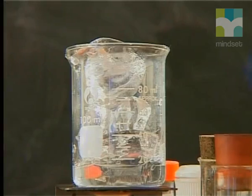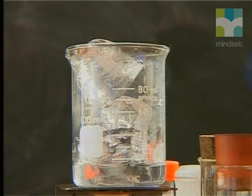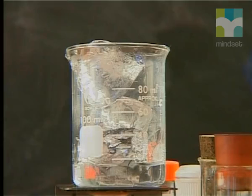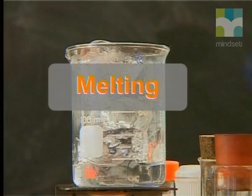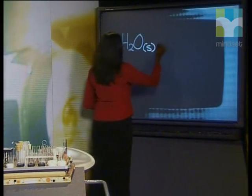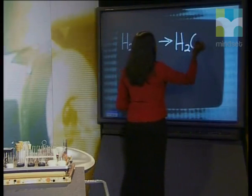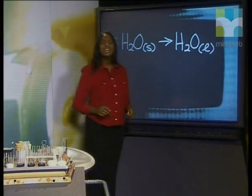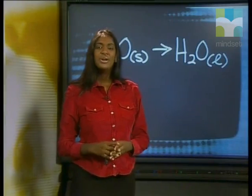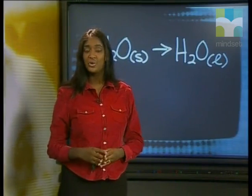Physical changes also take place when substances change phase. In the first beaker there are ice cubes, but if the ice cubes are left on the lab counter for a while, they melt to form liquid water. Ice or solid water can change from the solid phase to the liquid phase — we call this change of phase melting. When we represent this as a reaction, we write: H₂O(s) → H₂O(l). The (s) in brackets means solid, and the (l) in brackets means liquid. Look at what happens to the water molecules during this physical change called melting.